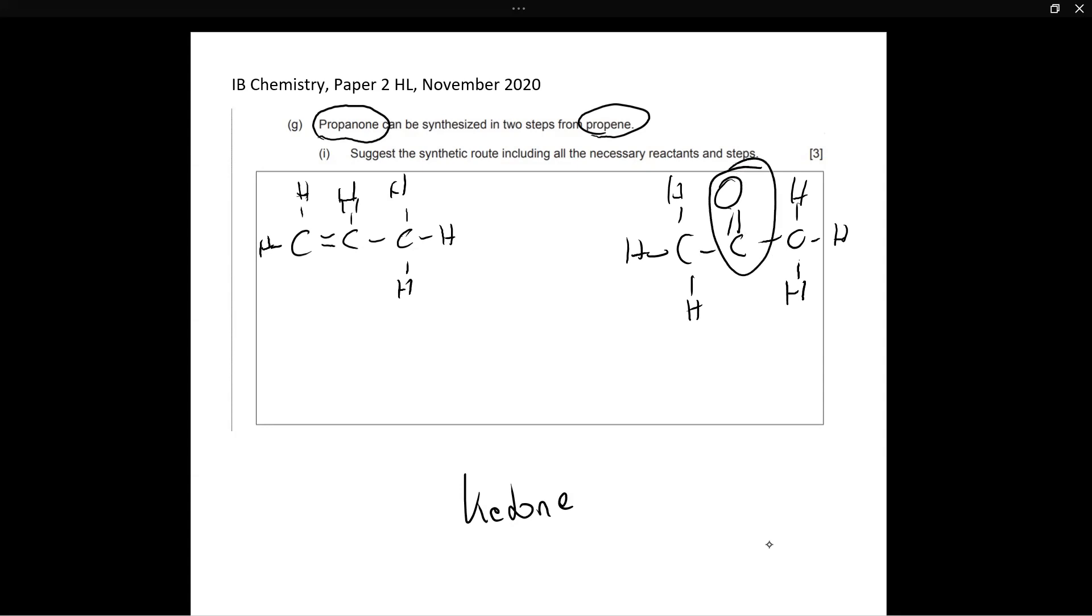This is propanone. You can see we have the functional ketone group. Now we have our starting product and we have our final product. Now what is left is the middle. What is in the middle? What product facilitates the transfer of propene to propanone? What is the middle product? I'm going to work backwards. How can we make propanone? Think about all the reactions you have learned in IB chemistry. How do we make a ketone from something?